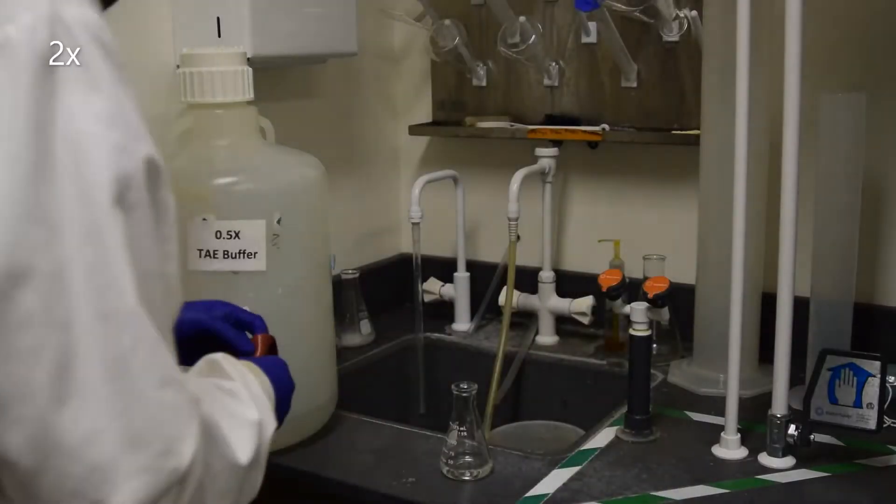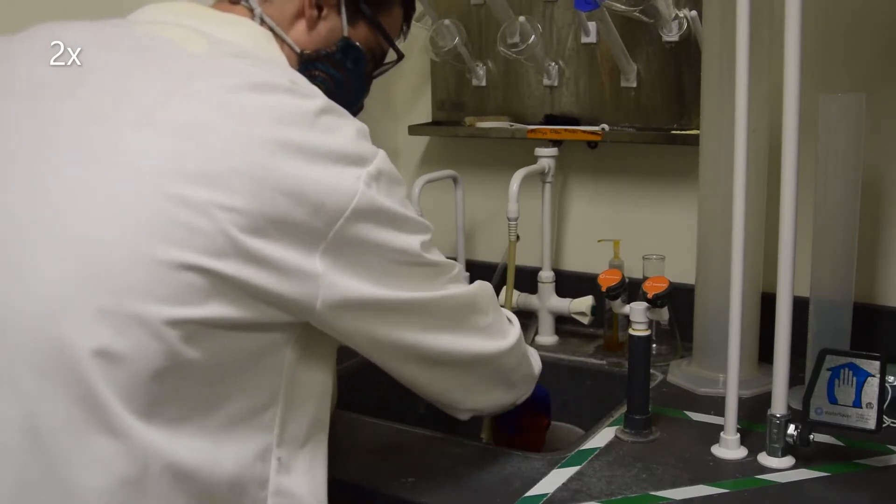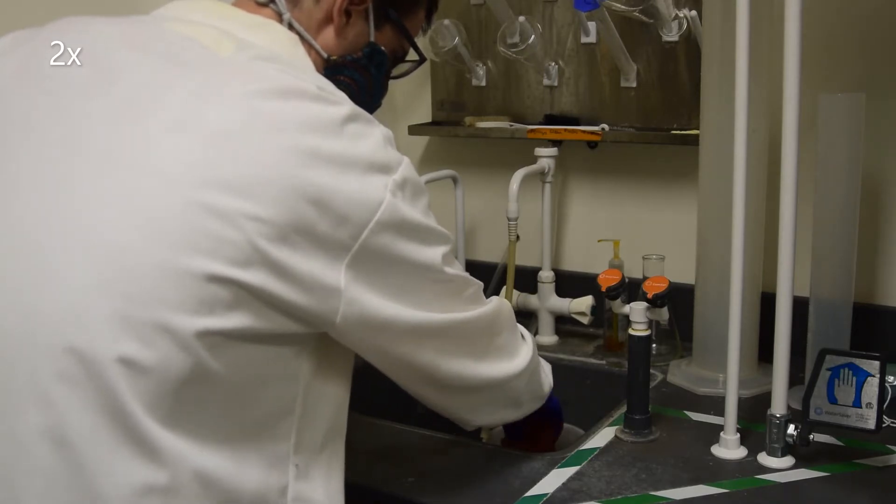Cool the mixture to about 55 degrees Celsius by swirling in a bucket of water. I usually do about 1 second per milliliter. You should be able to hold the flask without it hurting.